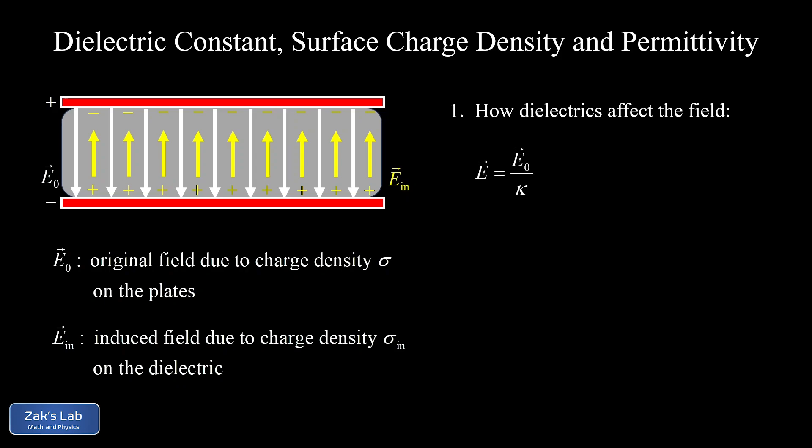This can be taken as a definition of dielectric constant. The resulting field E inside the capacitor is equal to E0 divided by kappa, where kappa is the dielectric constant. We knew the field had to be reduced in there, and we define the effectiveness of this dielectric material based on the factor by which it reduces the field.